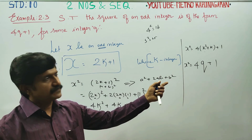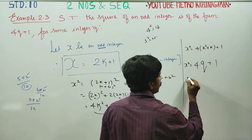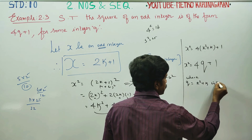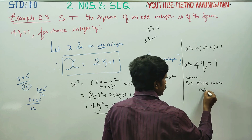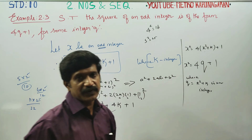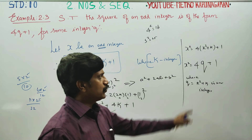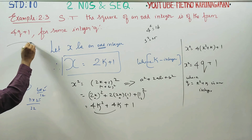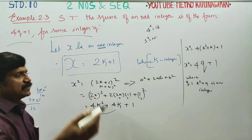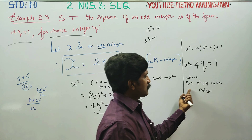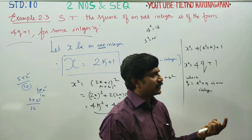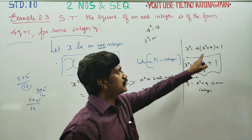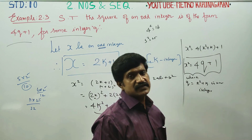Since k squared plus k is some integer, let q equal k squared plus k, where q is an integer. Substituting back, x squared equals 4q plus 1, where q is an integer. This shows that the square of an odd integer is of the form 4q plus 1, which is odd.